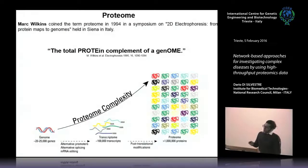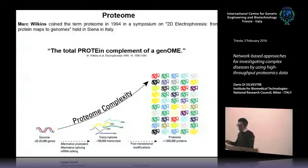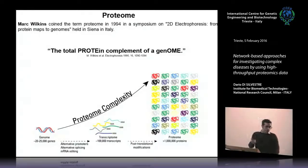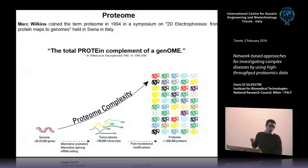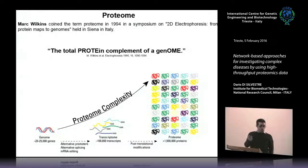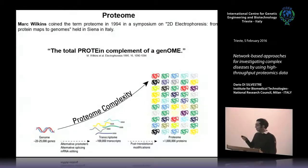Regarding the systems of a cell — genome, transcriptome, proteome — the proteome is certainly the most complex system, with an estimated one million protein forms. We therefore need technologies capable of facing this complexity.